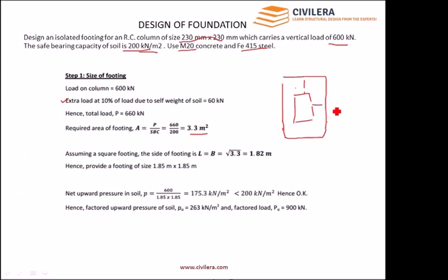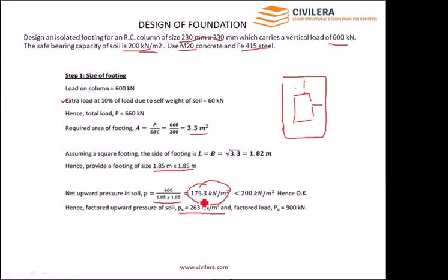Square footing is used for square columns, though site conditions may force a change — for example, a property edge restriction or an adjacent structure. The footing size is taken as 1.85 m. The net pressure from the column load alone is 600 divided by the area, giving 175 kN/m², which is less than the SBC of 200 kN/m², so we are safe. The factored pressure is 175 × 1.5 = 263 kN/m², and the factored load is 900 kN.